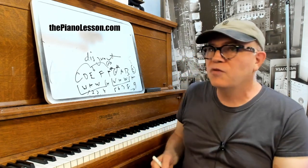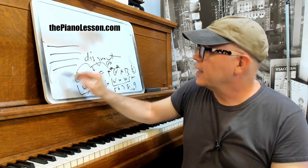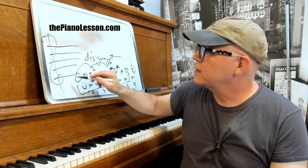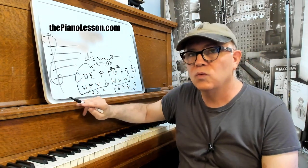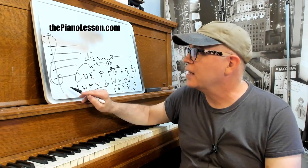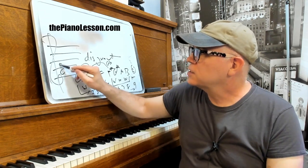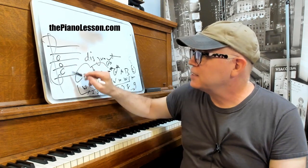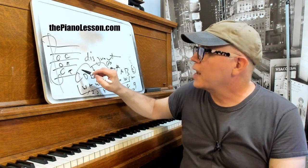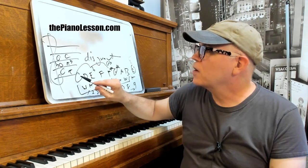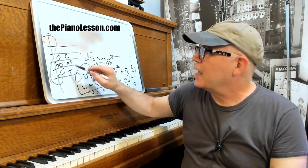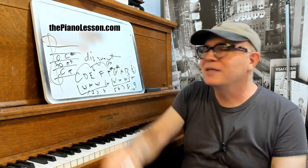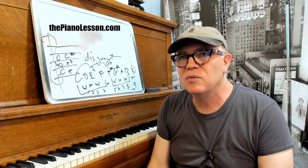Just for music reading — any triad that you see is always spaced in thirds. It could be F, A, C — or F, A-flat, C — or F, A-flat, C-sharp. That's how you make triads, and that's why sometimes we need to use double sharps and double flats.